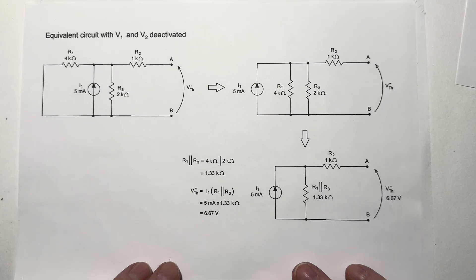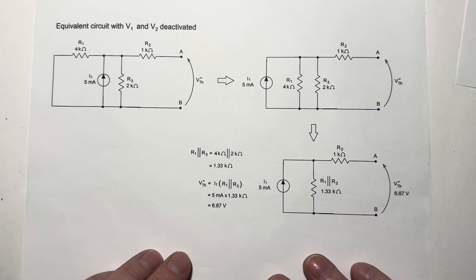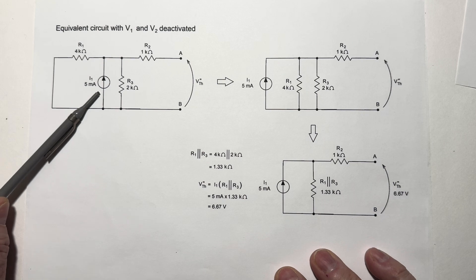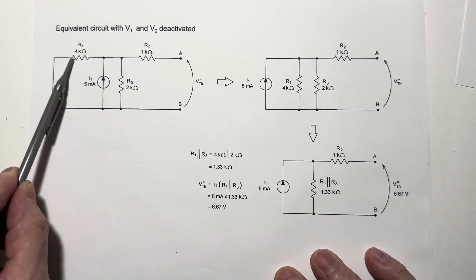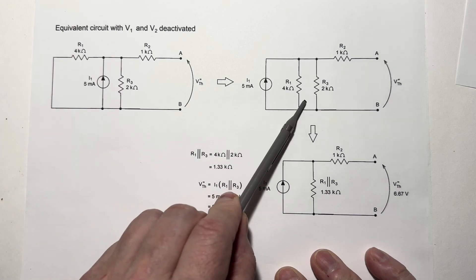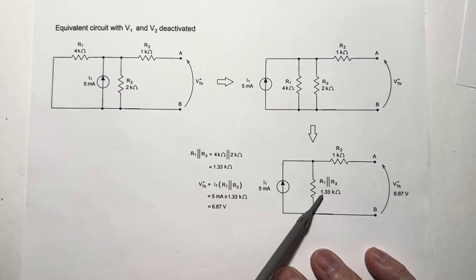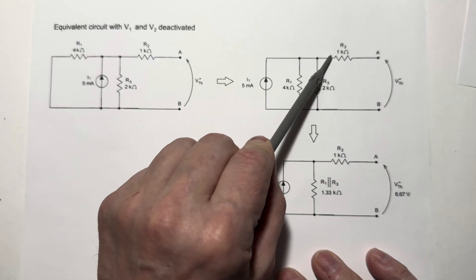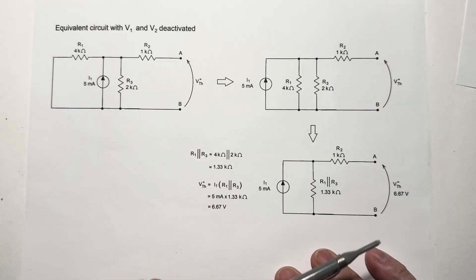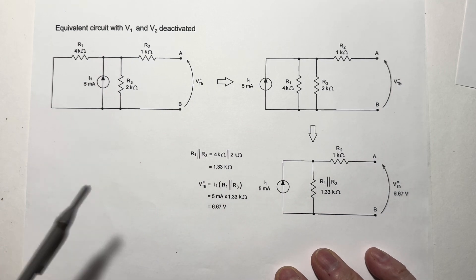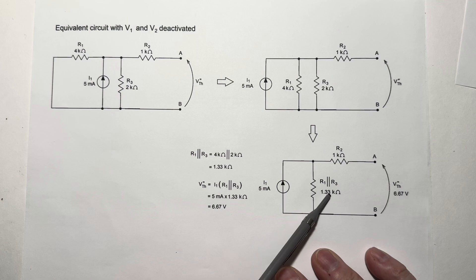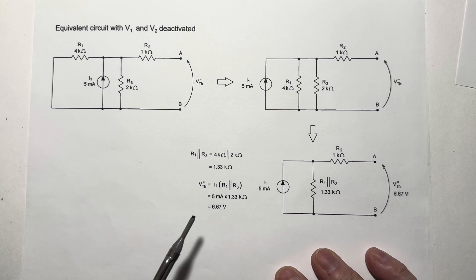Next, we're going to deactivate V1 and V2, leaving the current source active. That gives us this equivalent circuit. Now, we can view R1 and R3 as being in parallel with each other. So I redrew the circuit over here with that shown. We've got 4K in parallel with 2K, which is, again, 1.33K ohms. R2 has no effect on the output voltage, which I'm calling V''th. And the current source driving the equivalent parallel resistance gives us 5 milliamps times 1.33K ohms, which is 6.67 volts. That is the second component of our Thevenin voltage.